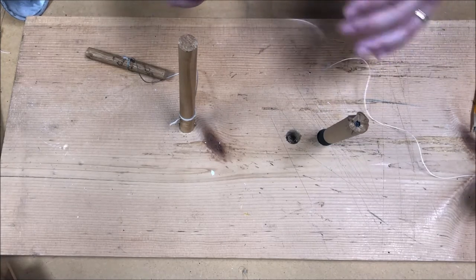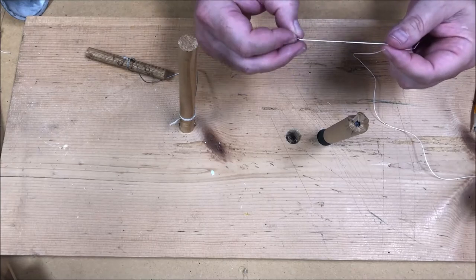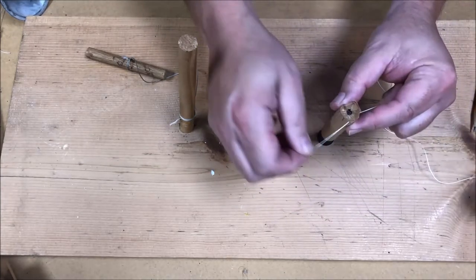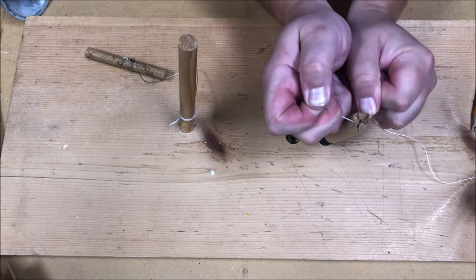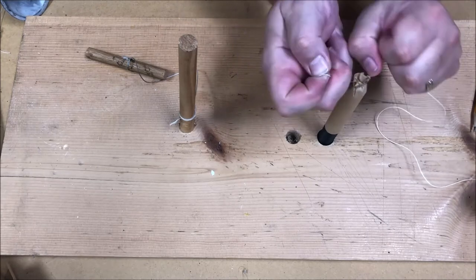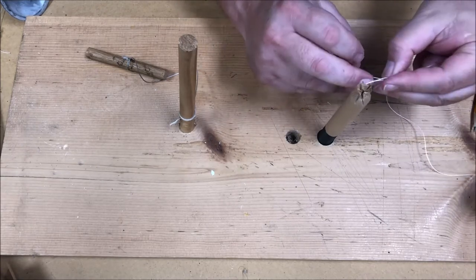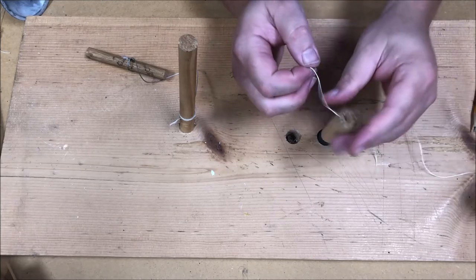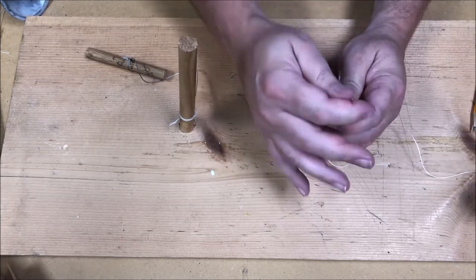Now we're going to take our string. And this is three ply linen cord, same kind of thing they would have used in period. We'll wrap around the crimp one time, pull it nice and tight, and then you secure it with two half hitches. And then you can press that down.